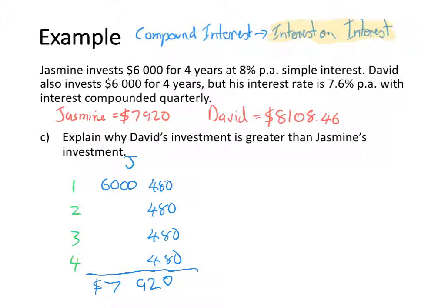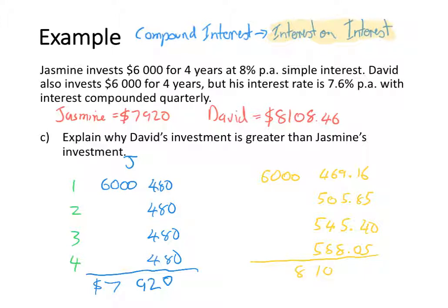Compare that to David. He started with $6,000, earning a lower rate of 7.6% compounding quarterly — four times in each of the four years. In the first year he earned $469.16, which is lower than what Jasmine earned, as expected from the lower rate. However, in the second year he earned $505.85 — already above Jasmine's annual simple interest. In the third year he earned $545.40, and in the fourth year $588.05, making his total $8,108.46.